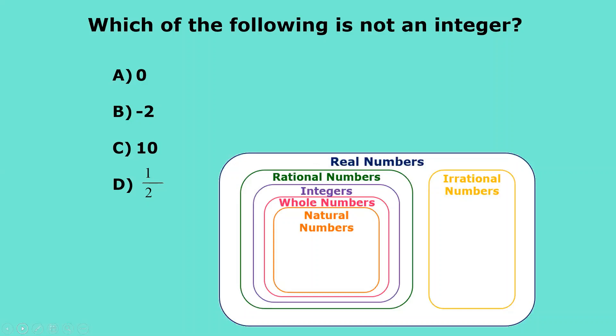We're going to go through some examples. Please pause the video to answer this question: which of the following is not an integer? Your answer is D. D is a fraction, therefore it is a rational number. However, it is not an integer.